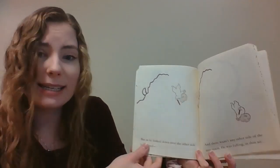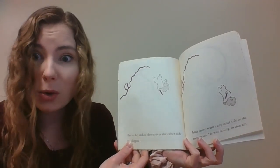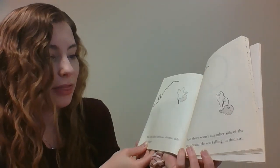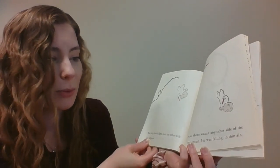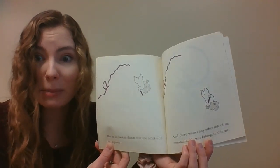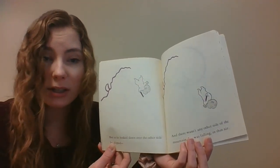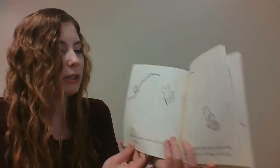But as he looked down over the other side, he slipped. And there wasn't any other side of the mountain. He was falling in thin air. So, what do you think is going to happen to Harold? Do you think he's going to be all right? What do you predict?